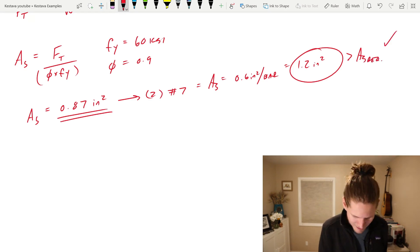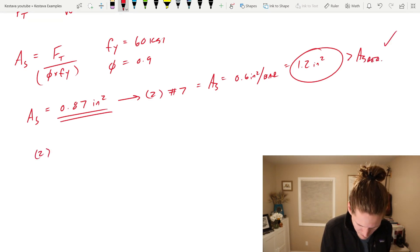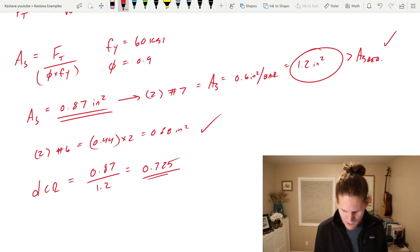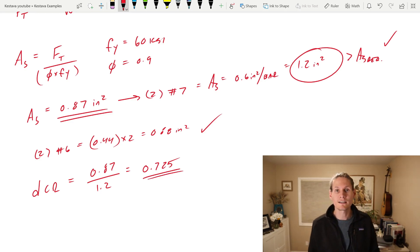I know you're looking at it right now and you're like, wait a second. Two number sixes is equal to 0.44 times two, which is 0.88 inches squared. That's still good, right? Why don't you do that? I know that is good as well. You're cutting it a little close, but technically from a numbers perspective you could prove that you're good to go. It's all about your comfort level and what you want to push. We're at 72% capacity for the strength of our chord reinforcing.